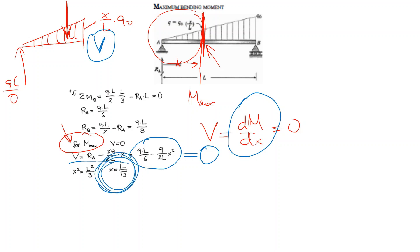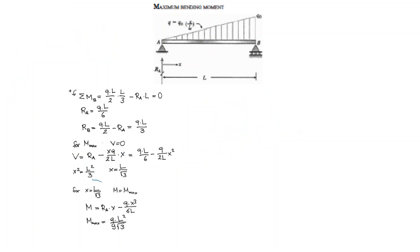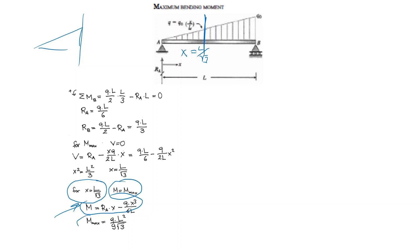Setting V equal to zero, we find that x equals L over the square root of 3. This is the position of the maximum bending moment. Cutting at this position and calculating the moment gives M_max equals q₀L² divided by 9√3.